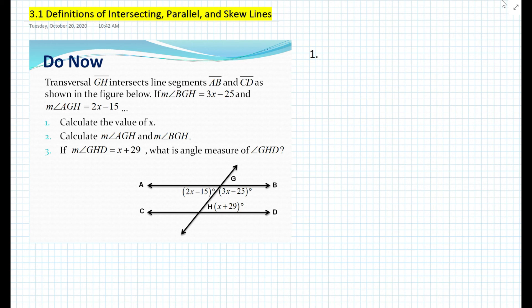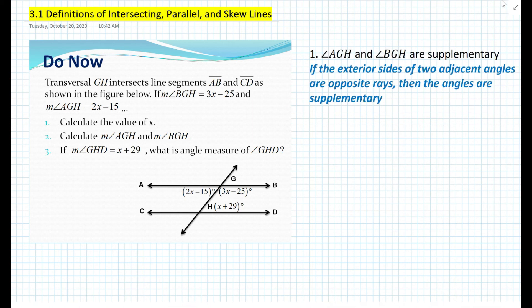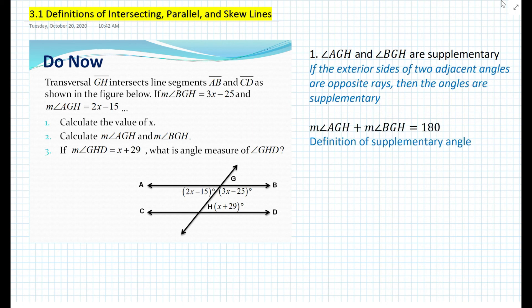Let's get started with number one — how do we calculate the value of x? If you look at the diagram, we know that angle AGH and angle BGH are supplementary because they're adjacent angles and they form a linear pair. So we can write that angle AGH and angle BGH are supplementary. The reason is: if the exterior sides of two adjacent angles are opposite rays, then the angles are supplementary. Therefore, the measure of angle AGH plus the measure of angle BGH equals 180, due to the definition of supplementary angles.